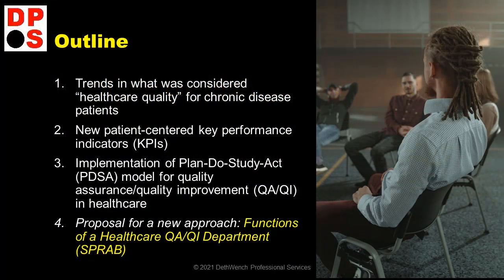Here's what I'm going to talk about. First, I'm going to talk about trends in healthcare quality — how do we figure out what healthcare quality is, especially for chronic disease patients. Next, I'm going to talk about patient-centered key performance indicators or KPIs, what those are and how we should think about them. After that, I'm going to talk about implementing the Plan-Do-Study-Act or PDSA model for quality assurance and quality improvement, or QAQI, in healthcare. I'm just going to skim the surface and talk about the implementation of that model and what it's done for healthcare, at least in the U.S.